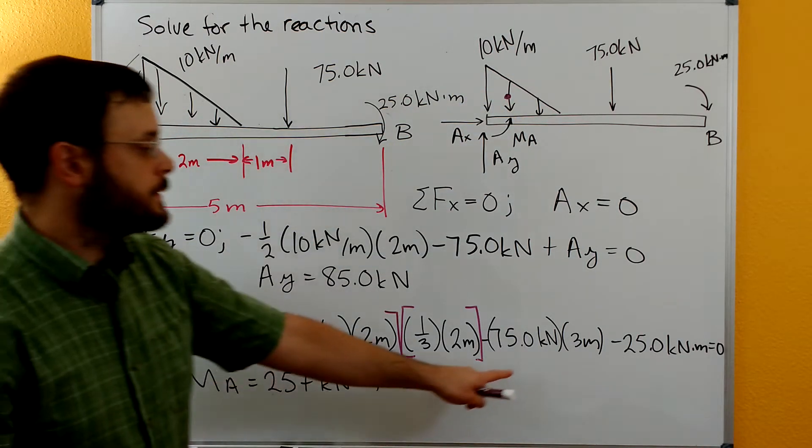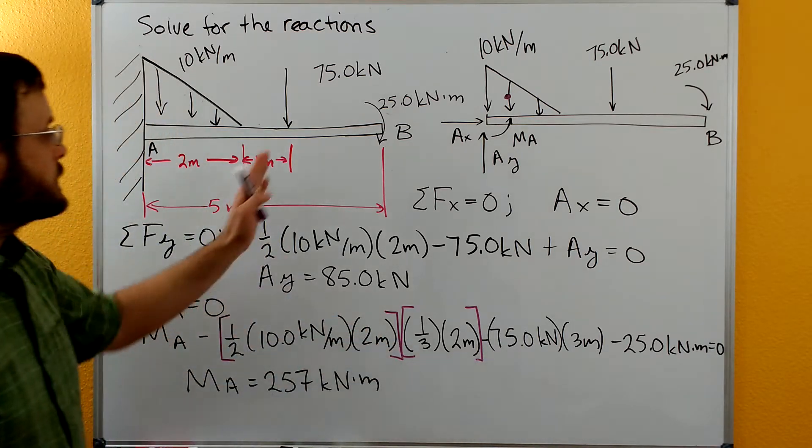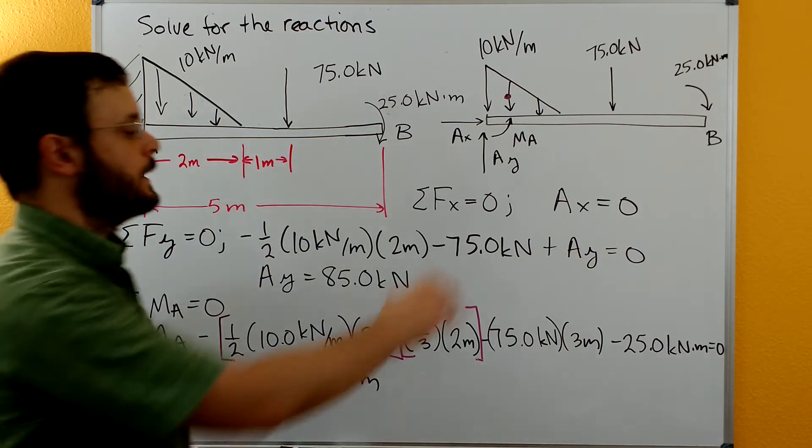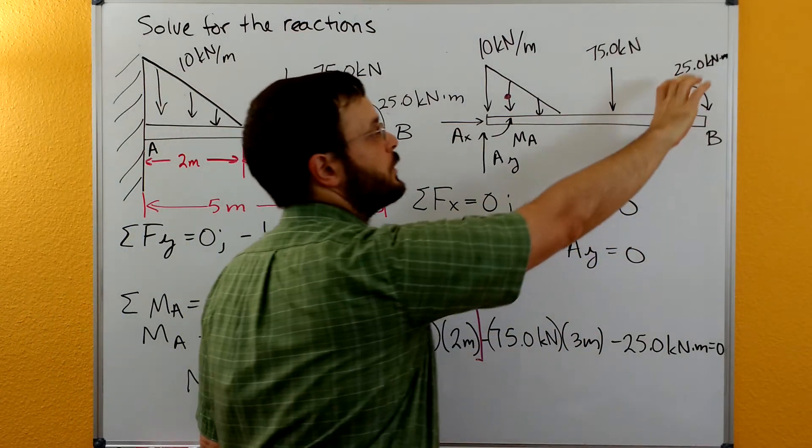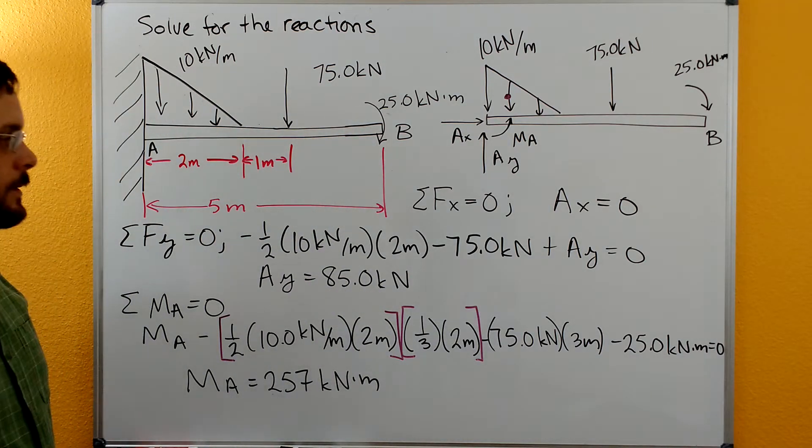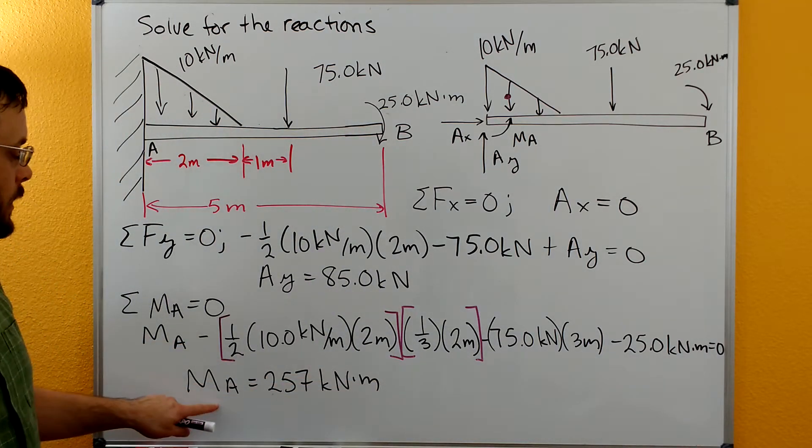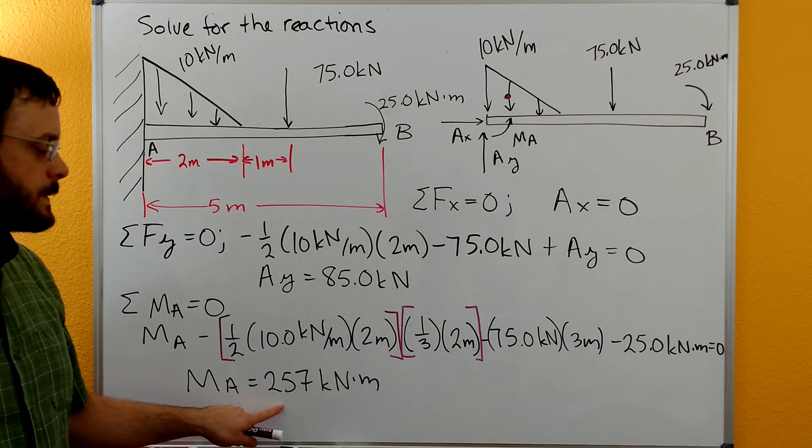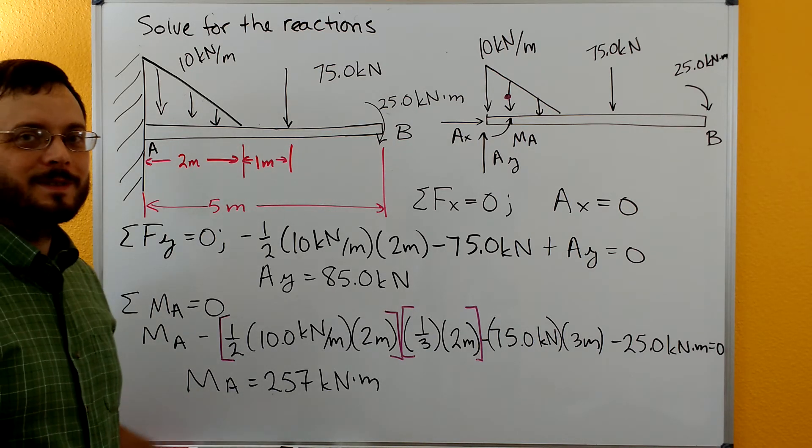And then we have our 75 kilonewtons times the three meters total that it acts, two meters plus the one meter, it's also negative. And then we have our 25 kilonewton meters at the very end that's negative. So that all sums to equal zero, and we can solve that. MA is our only unknown, and we'll get MA is equal to 257 kilonewton meters. So thanks for watching.